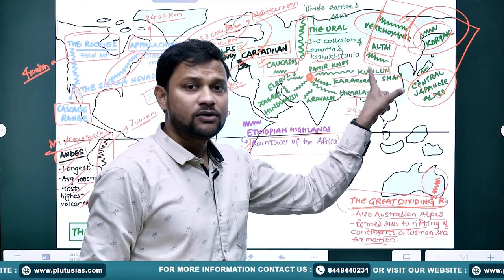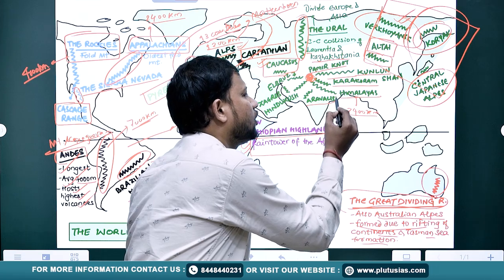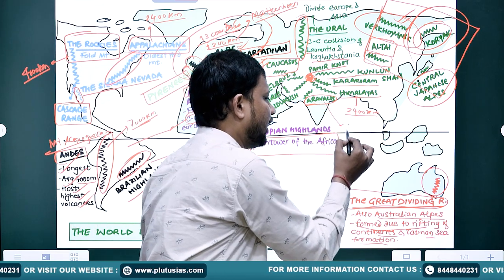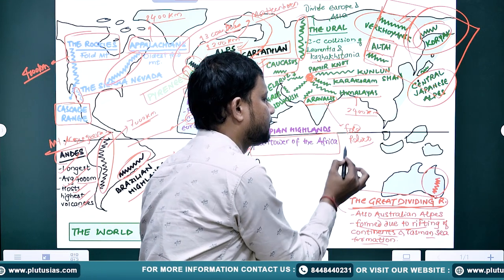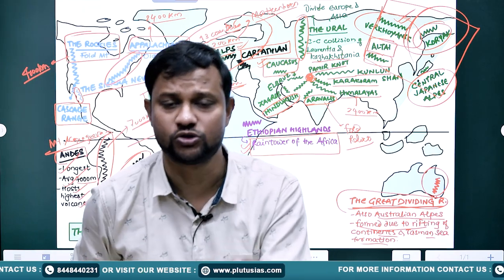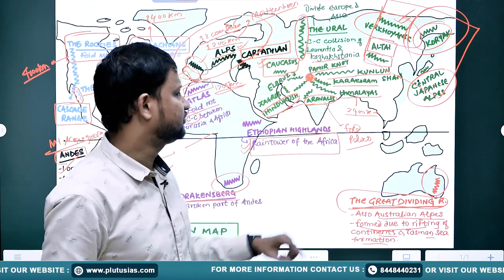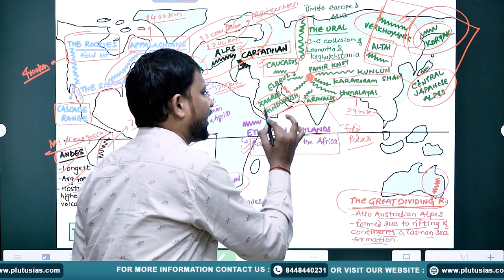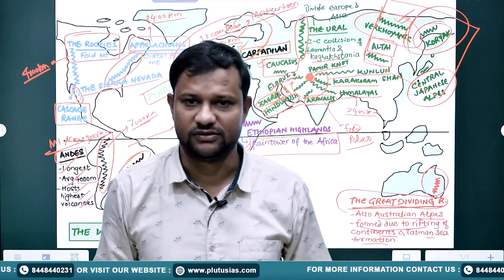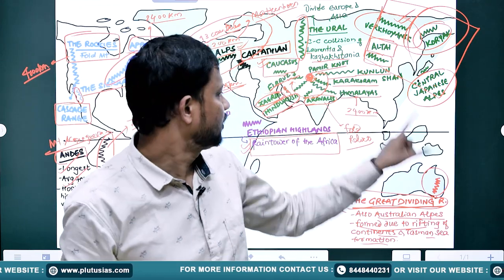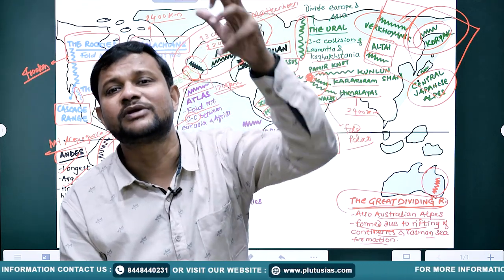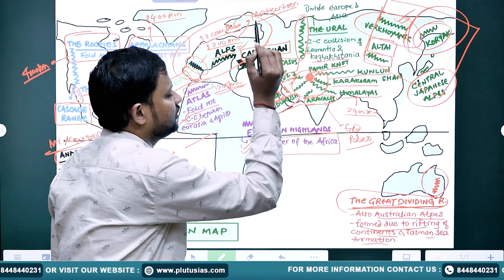So: Kunlun Shan, Karakoram, Himalayas. Then you will find one of the world's oldest fold mountains — the Aravallis — now a relic or residual mountain. In Iran and Pakistan there is Hindu Kush, whose literal meaning is 'gateway to India.' Then in Iran: Zagros, and completing the cycle — Alborz. So the Pamir cycle is: Kunlun Shan → Karakoram → Himalayas → Aravallis → Hindu Kush → Zagros → Alborz.